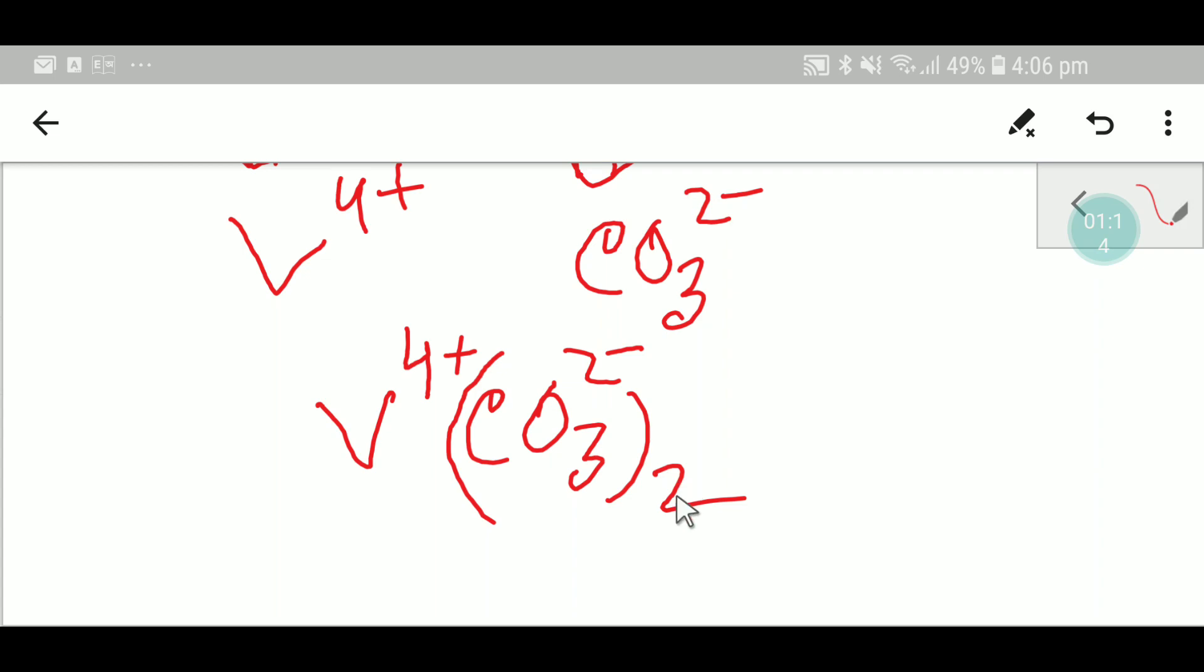You have to place here 2 as a subscript of carbonate, and that gives you 4-. So this 4- and this 4+ will cancel out, and you will get the formula for vanadium carbonate.